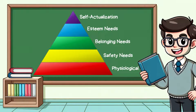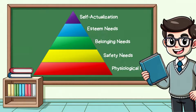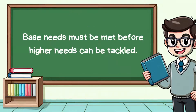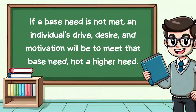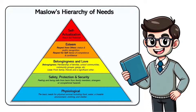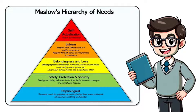Maslow's hierarchy of needs is a motivational theory in psychology comprising a five-tier model of human needs. The five-step pyramid model proposes that base needs must be met before higher needs can be tackled. If a base need is not met, an individual's drive, desire and motivation will be to meet that base need, not a higher need. Let's look at each need in order, then later in the video, I'll show you exactly what this hierarchy means for motivation and self-development.